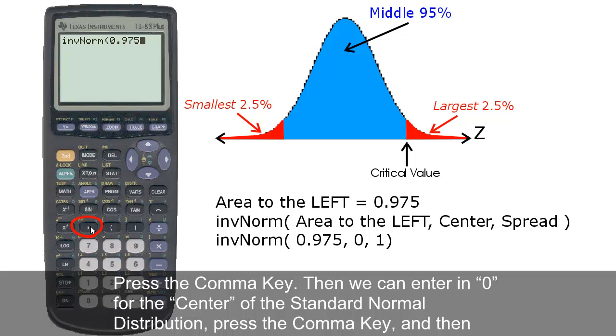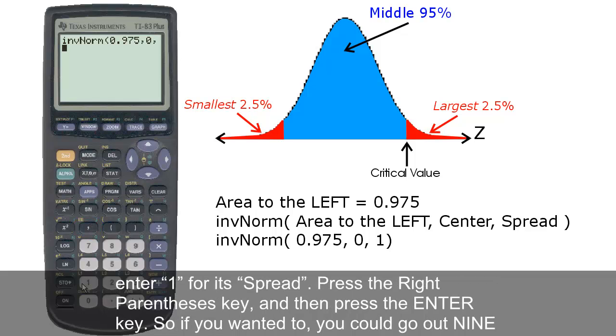Press the comma key, then we can enter in 0 for the center of the standard normal distribution. Press the comma key, and then enter 1 for its spread.